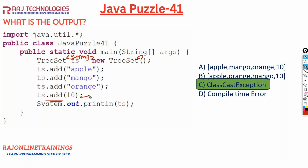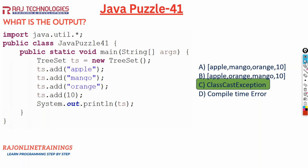When we apply the generic type String, it will now give a compile-time error. Because with TreeSet of type String, you can only add String elements. If you try to add a numeric type like integer 10, it will give a compile-time error. But if you are not applying generics and you add different types into TreeSet, then it throws a ClassCastException. Please subscribe, like, and share. Thank you.